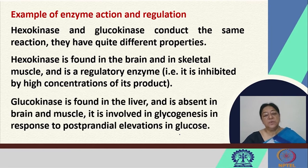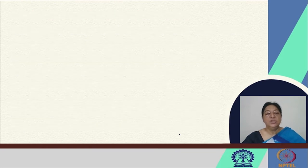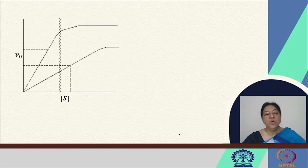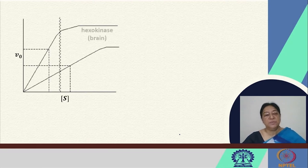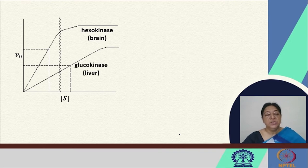Glucokinase, on the other hand, is found in the liver and is absent in the brain and muscle, and it is involved in glycogenesis when there are elevated levels of glucose. Let us look at the V0 versus S curve, a Michaelis-Menten kinetics curve, to understand how we can look at the regulation related to levels of glucose.